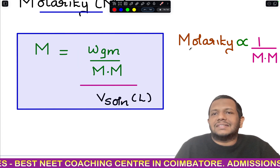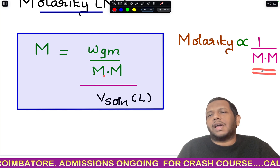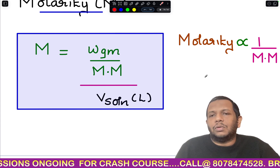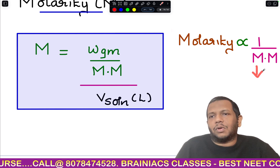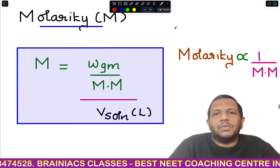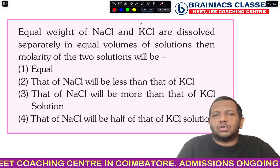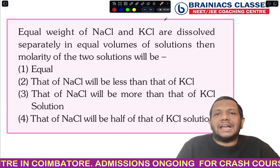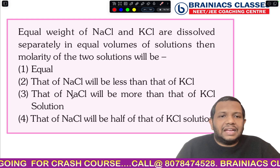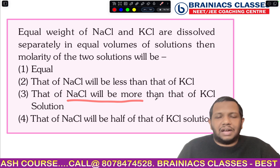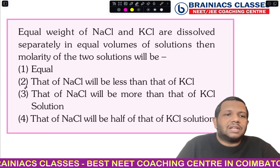Molarity is inversely proportional to the molar mass of the solute. If a solute has a higher molar mass, its molarity is lower; if molar mass is lower, molarity is higher. Comparing NaCl and KCl: potassium has a higher atomic weight than sodium, so the molar mass of KCl is higher than that of NaCl. Therefore the molarity of NaCl solution is higher than that of KCl solution — the answer is option 3.